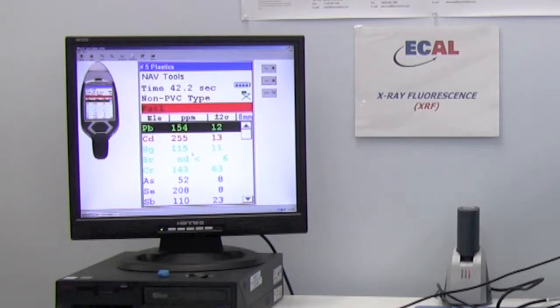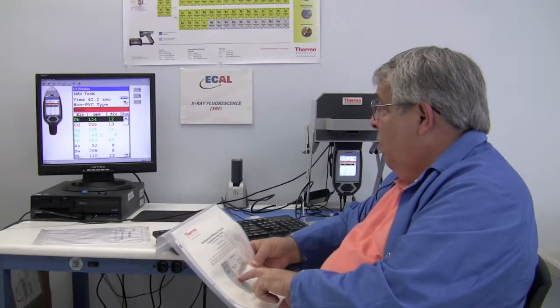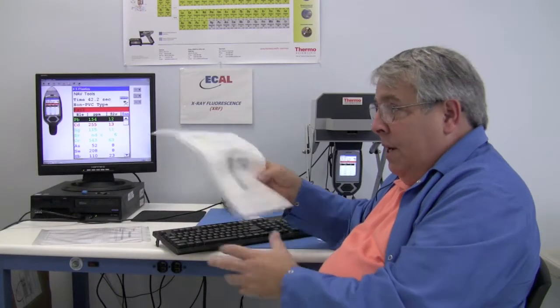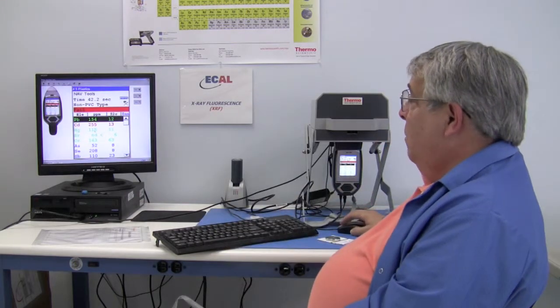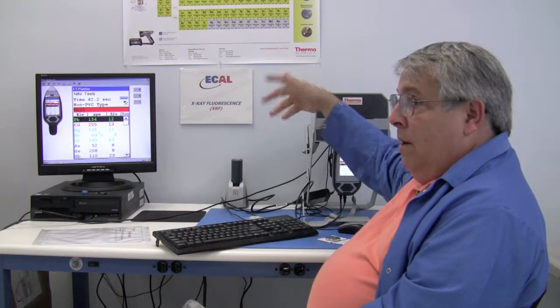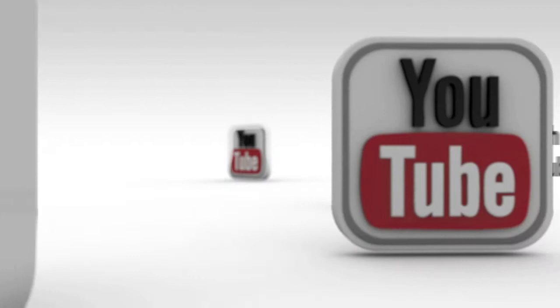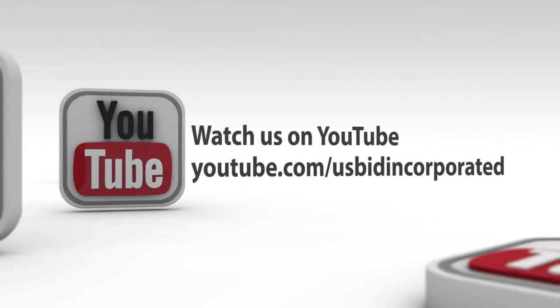Cadmium, we're a little off on. Chrome, 103 versus 143, plus or minus 63. Mercury, 106 plus or minus 10. So we're right in there. So what this is saying is that basically our machine is operating within compliance.